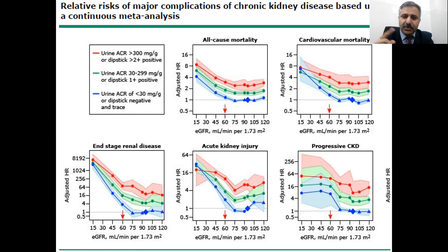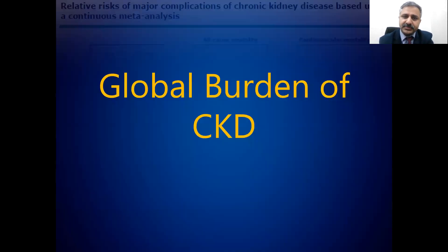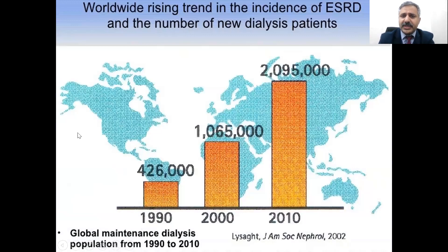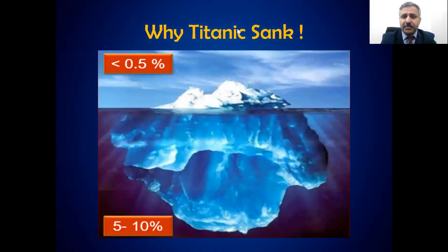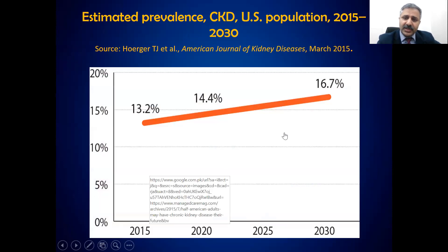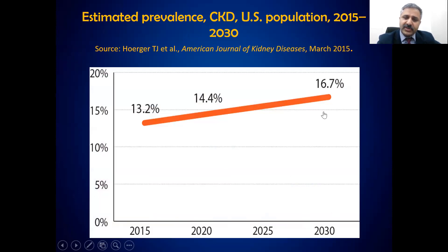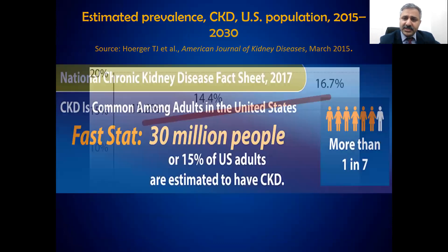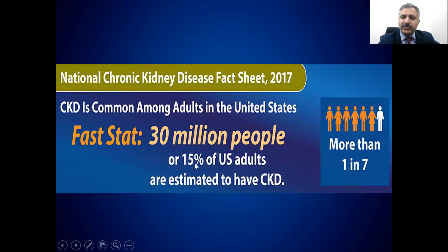Albuminuria not only determines progression of kidney disease but also increases heart disease risk. Globally, in 2010, almost 2 million people had end-stage renal disease and were on dialysis; currently that number is 4 to 5 million. These dialysis patients represent less than 0.5% of the whole CKD population. CKD prevalence was predicted to reach 16% in America by 2030, but it was already 15–16% in 2017–18 and is now close to 20% — meaning 1 in 5 or 6 people have chronic kidney disease.